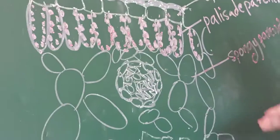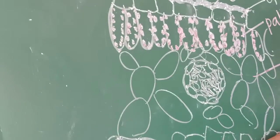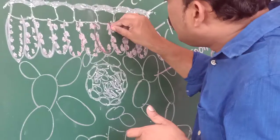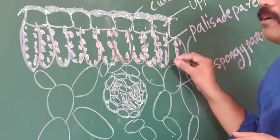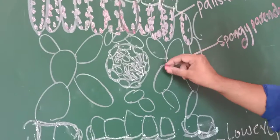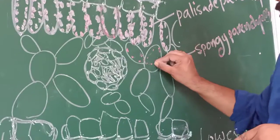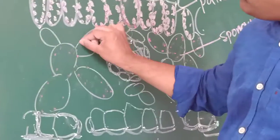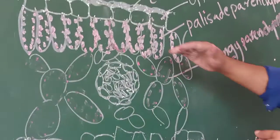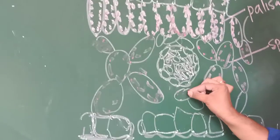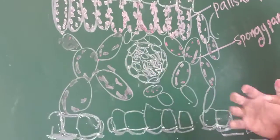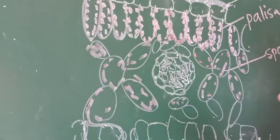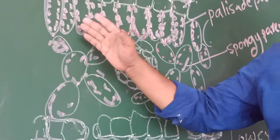In a section of leaf: upper region — upper epidermis; lower region — lower epidermis. Below the upper epidermis, we observe palisade parenchyma. Below the palisade parenchyma, we observe spongy parenchyma. Can you observe the difference between palisade parenchyma and spongy parenchyma? In spongy parenchyma, there are a lot of gaps between the cells. But in palisade parenchyma, the cells are closely arranged — no gap between the cells.